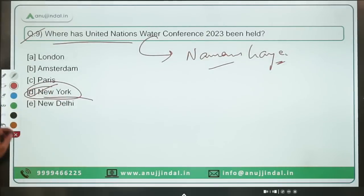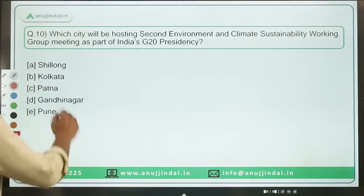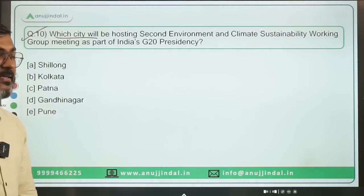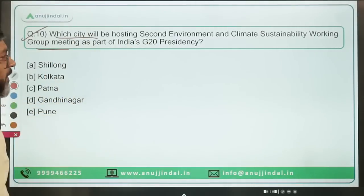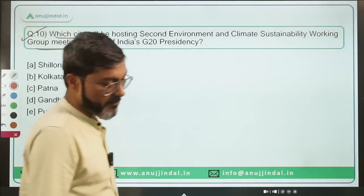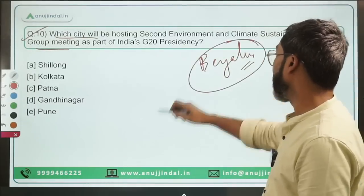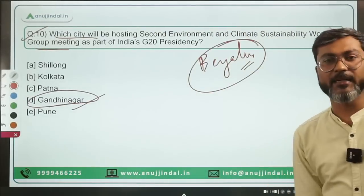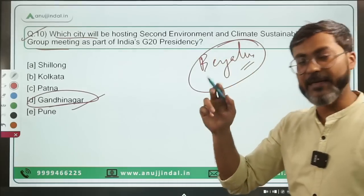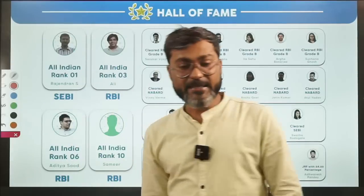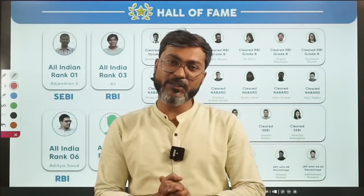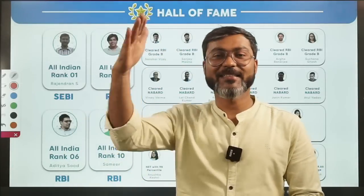Last question: which city will host the second edition of the Environment and Climate Sustainability Working Group meeting as part of India's G20 presidency? The first edition took place in Bengaluru, but the second meeting will take place in Gandhinagar. Option D is the correct answer. That's all for today — I hope all questions and explanations are clear. If you have any doubts, ask in the comment section. See you in the next session on Friday. Keep studying hard, goodbye!